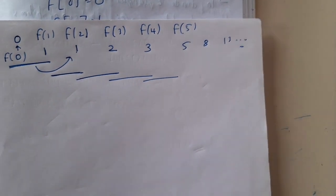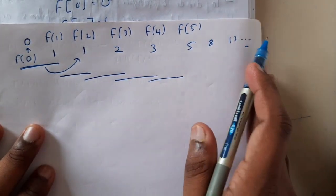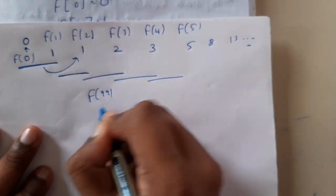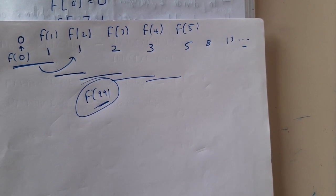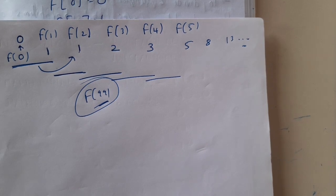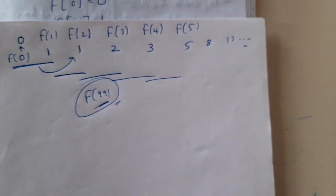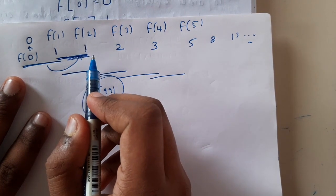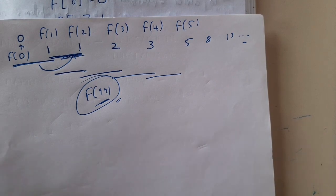If I ask you to find Fibonacci of 10, you'd calculate step by step up to 10. But what if I ask for Fibonacci of 99? You'd have to calculate from 1, 2, 3... all the way to 99 — that's a really lengthy process. The same problem occurs when the computer runs this without storing any intermediate results.